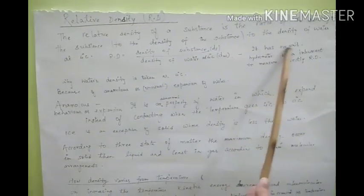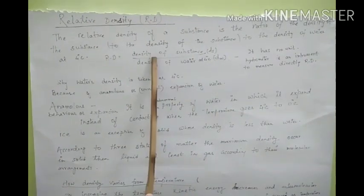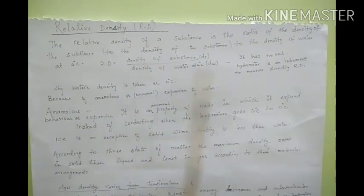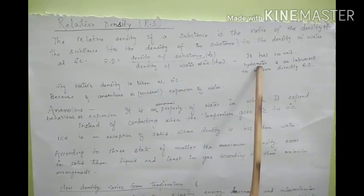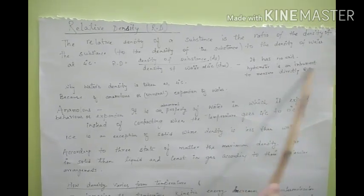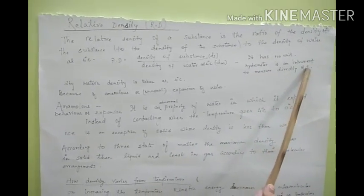It is a ratio so it has no unit and we can directly measure relative density with the help of a hydrometer. A hydrometer is an instrument to measure the relative density directly.